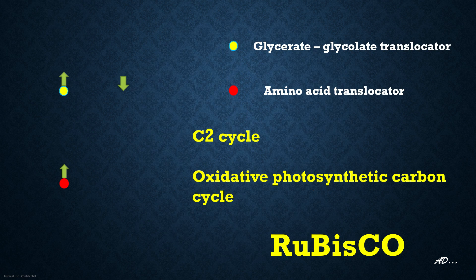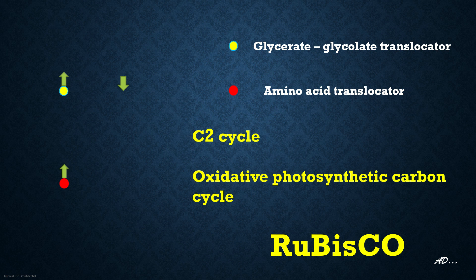Before we start with the cycle, we will talk about the most important enzyme of this reaction. Rubisco is the most important enzyme of this reaction. The whole cascade of reactions commences with this enzyme. Rubisco is known to play a dual role — it can act as an oxygenase, and it can also act as a carboxylase.